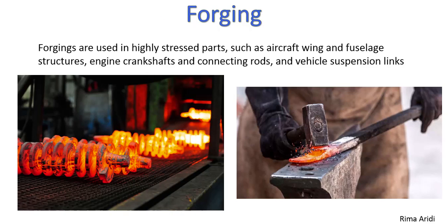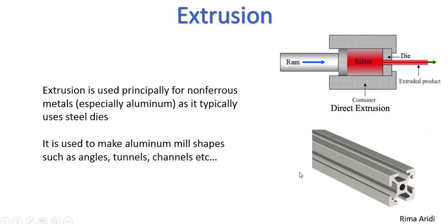Forging is used in highly stressed parts where the part is heated above the critical temperature and is applied to a high impact force. Extrusion is used mainly in aluminum, where they form this shape and other shapes.